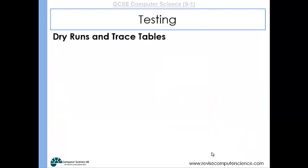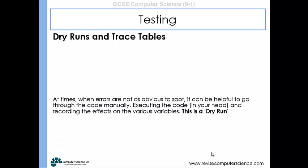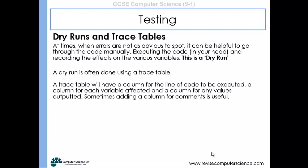So with regards to white box testing, where we're looking at just the algorithm and making sure that it functions as it should, we can produce trace tables. We can do dry runs of the algorithm. So at times when errors aren't as obvious to spot, it can be helpful to go through the code manually, executing the code in your head, and recording the effects of the various variables. This is a dry run, and we use a trace table to document our results.